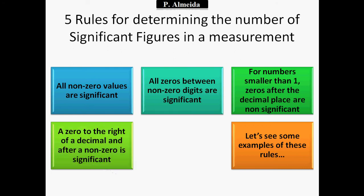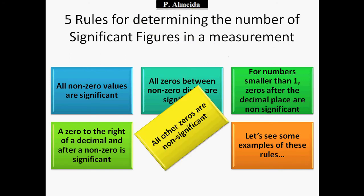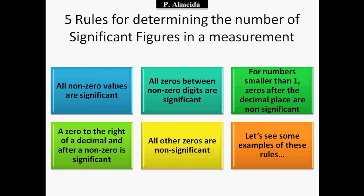Rule number four: a zero to the right of a decimal and after a non-zero is significant, even though it is a zero. And all other zeros that are not specified by these rules are going to be non-significant. So: all non-zero values are significant; all zeros between non-zero digits are significant; for numbers smaller than one, zeros after the decimal place are non-significant; and a zero to the right of a decimal and after a non-zero is significant. All other zeros are non-significant.